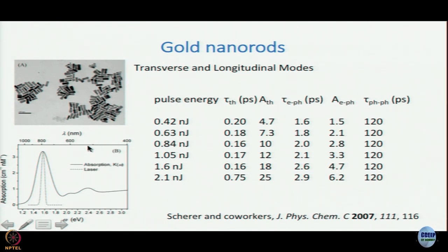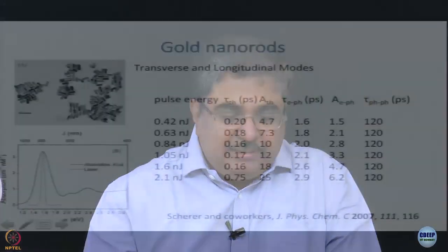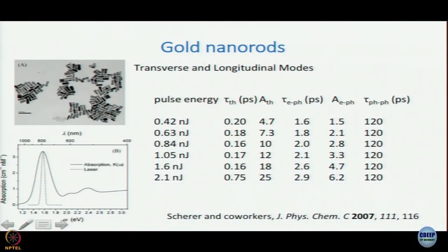500 nanometers roughly is what you get for spherical nanoparticles, so that more or less matches because the width is comparable to the diameter of the nanoparticles discussed earlier. And here you see a TEM image of these gold nanorods.